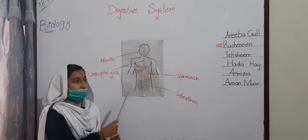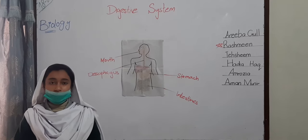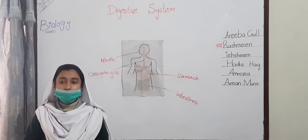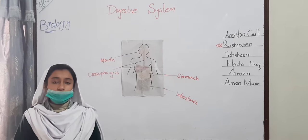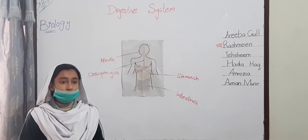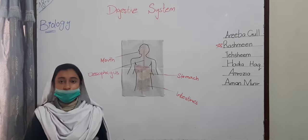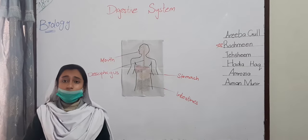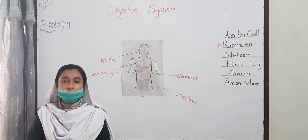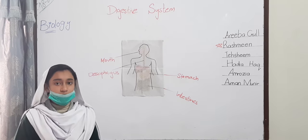Small intestine. As food leaves our stomach, it passes on to the small intestine. The final digestion of carbohydrates, fats, and proteins occurs in the small intestine. Three organs help in digestion of food here: liver, pancreas, and intestinal walls.